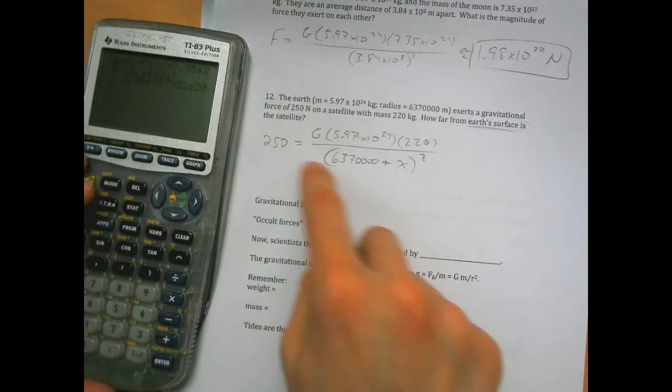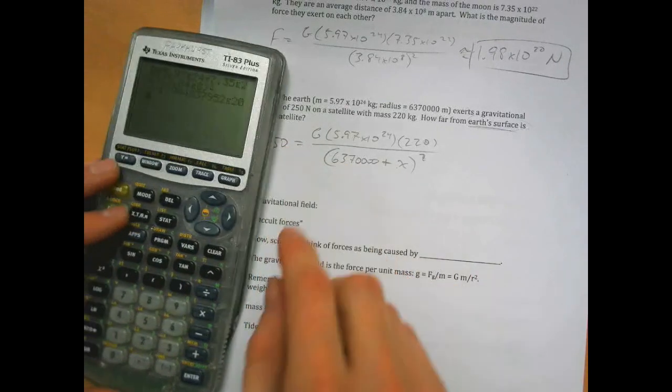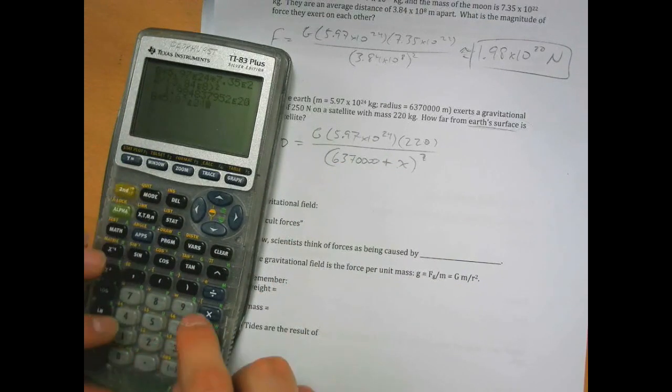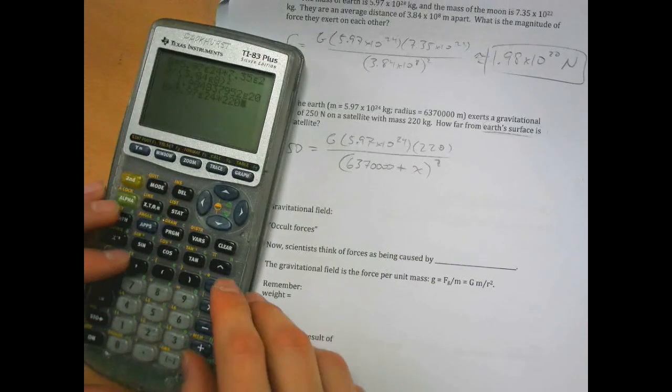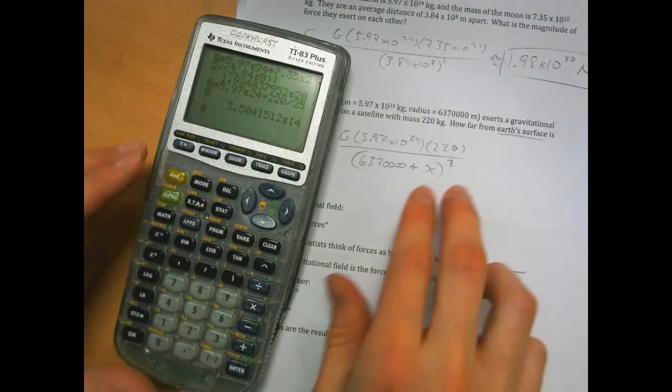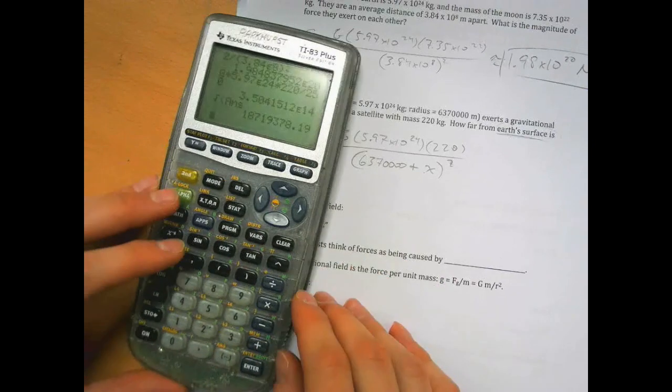So doing algebra, we would divide the 250, multiply this over here, so we'd have g times 5.97e24 times 220, then that would be divided by the force, we'd move that over, and that would equal this stuff squared, so we take the square root.